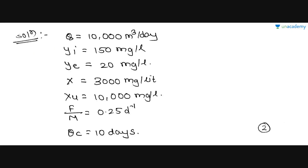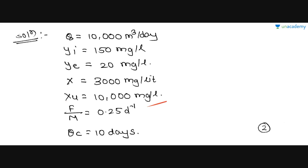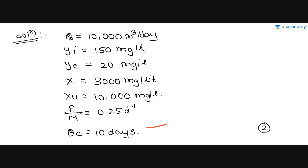Let's organize the given data. Q = 10,000 m³/day; Yi (influent BOD) = 150 mg/L; Ye (effluent BOD) = 20 mg/L; X (MLSS in aeration tank) = 3000 mg/L; XU (MLSS in return sludge/underflow) = 10,000 mg/L; F/M ratio = 0.25; and θC (mean cell residence time) = 10 days.